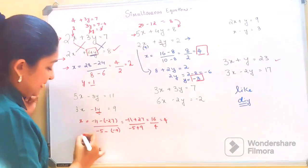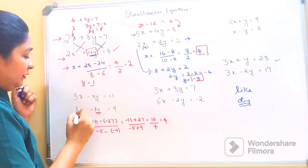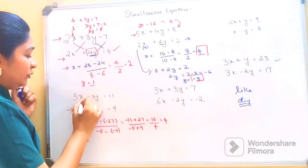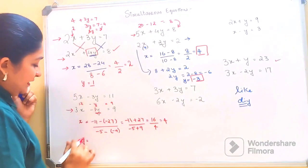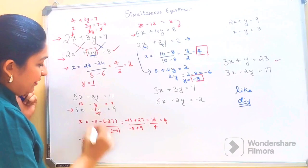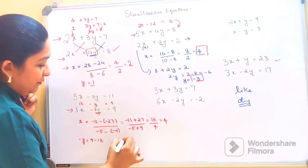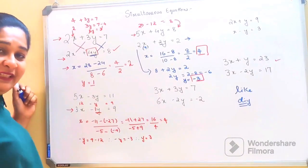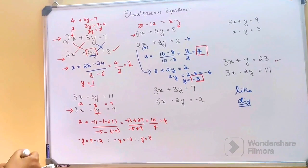Now to find y, we'll put x into one of the equations. So 3 into 4 gives 12, minus y equals 9. Therefore, minus y equals 9 minus 12, shifting 12 to the other side. So minus y equals minus 3, therefore y equals 3.